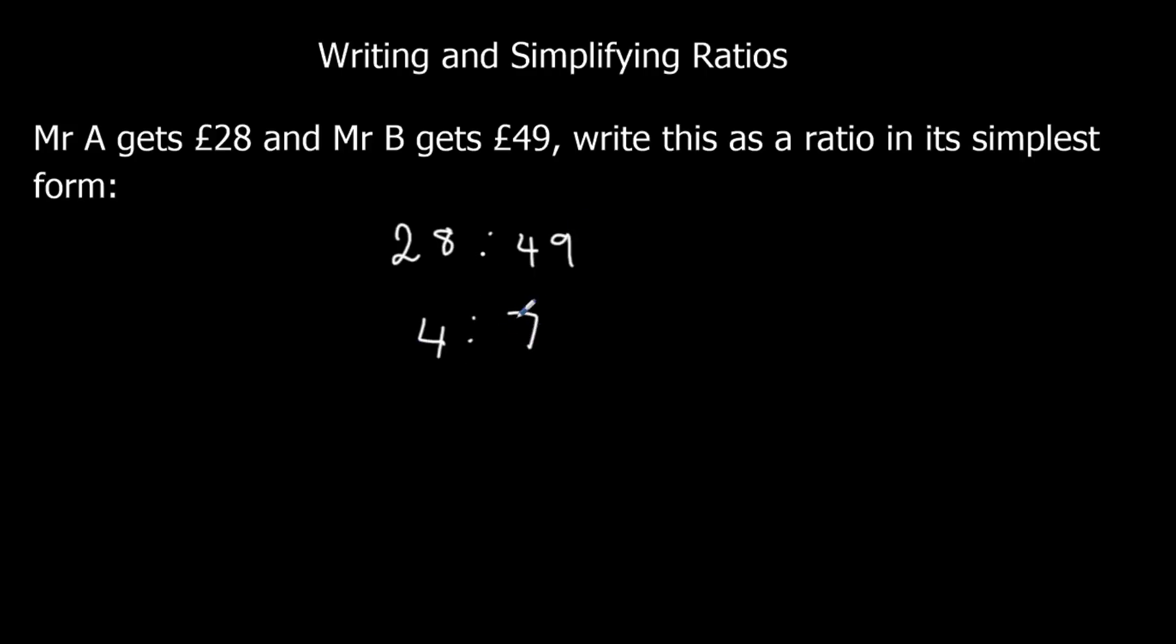These numbers aren't in the same times table again, so we can't simplify it anymore. That's the simplest form. So for every £4 Mr A gets, Mr B gets £7.